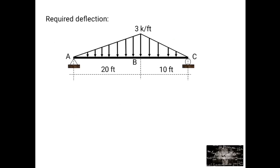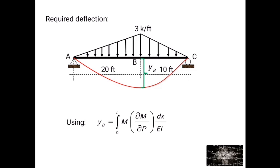For the required deflection, we have the elastic curve, and we need to find YB — the required deflection at point B. To find YB using this formula, YB is equal to the integral of M times the partial derivative of M with respect to P, times dX over EI, with limits 0 to L.